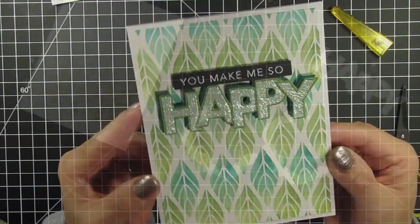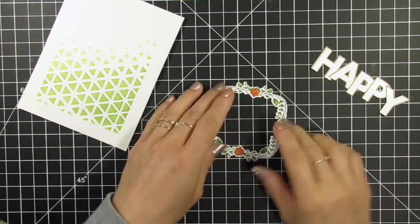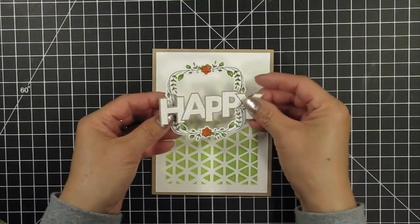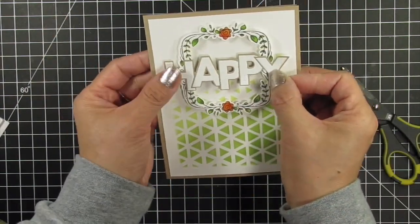For my last card, I attached the two hanging vines to form a frame. Then I applied sticky circles and sticky strips to both the frame and the heat embossed happy die.